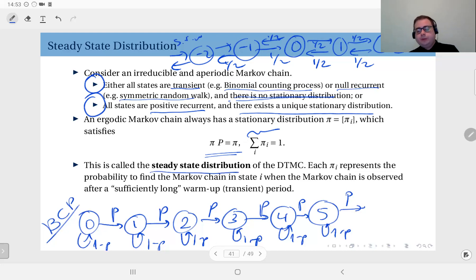So what does this mean? Each component of the steady state distribution represents the probability to find the Markov chain in state i when the Markov chain is observed after a transient period. What is that transient period? We call that a sufficiently long warm-up time.